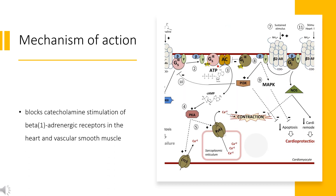Mechanism of Action: Acebutolol is a selective beta-1 receptor antagonist. Activation of beta-1 receptors by epinephrine increases the heart rate and blood pressure, and the heart consumes more oxygen. Acebutolol blocks these receptors, lowering the heart rate and blood pressure — the reverse effect of epinephrine. In addition, beta-blockers prevent the release of renin, a hormone produced by the kidneys, which leads to constriction of blood vessels.